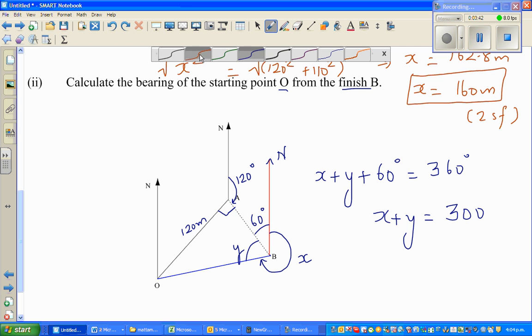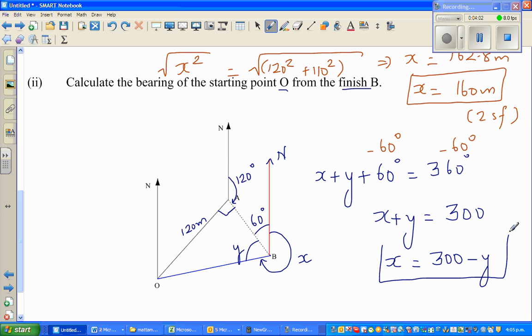Let me show you for those who struggle to understand these steps. You're taking away 60 from this side, so 360 minus 60 is 300. So I can say x, which is what I want to find, is 300 minus y. So I will have to find angle y.